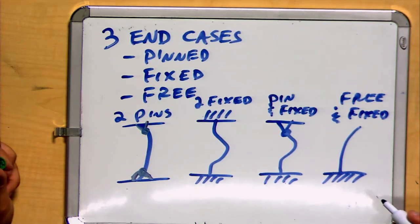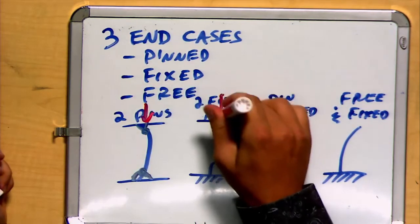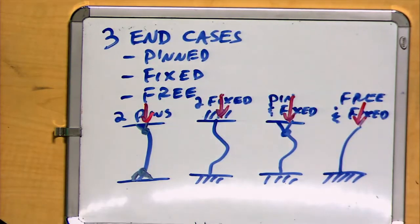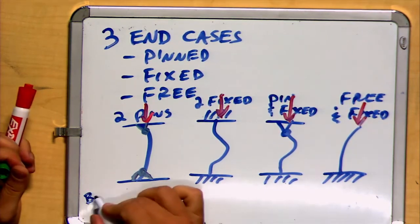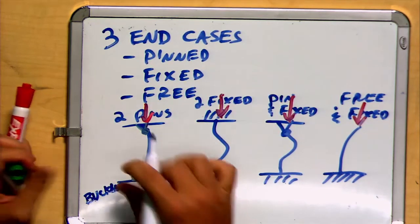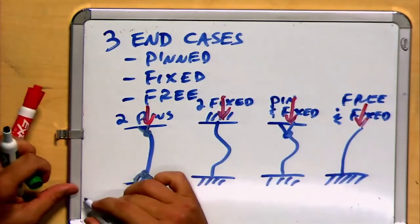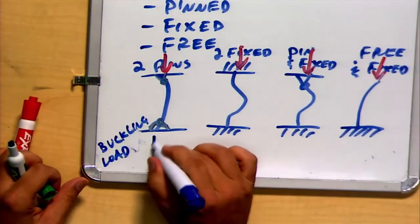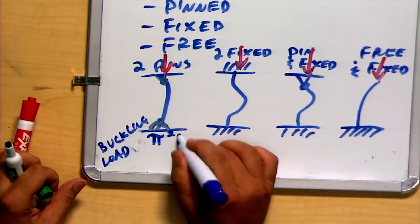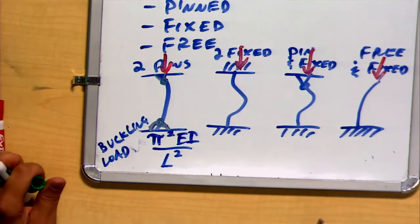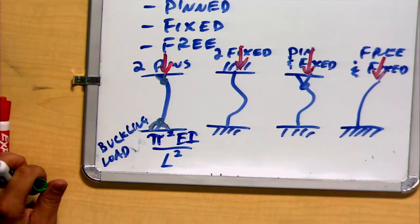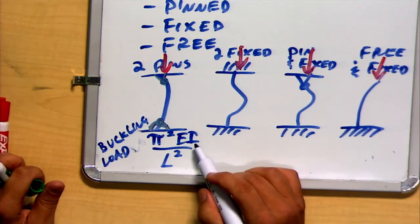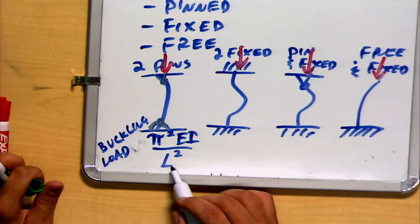So for each of these possible combinations, if we apply our axial compressive load, we will reach a critical buckling load. We will reach a critical buckling load at each of the following values. In the first case, pi squared EI over L squared. That's the relationship. You'll notice it takes the Young's modulus into account. It takes the moment of inertia into account. And it takes the length into account.